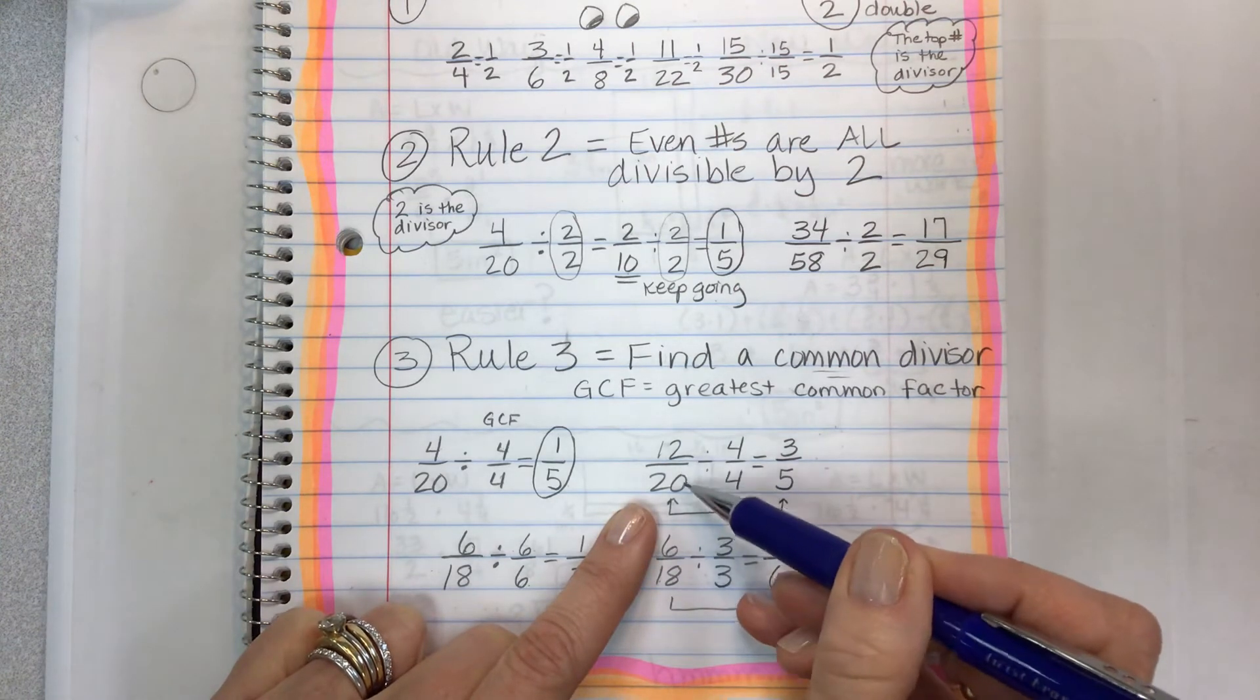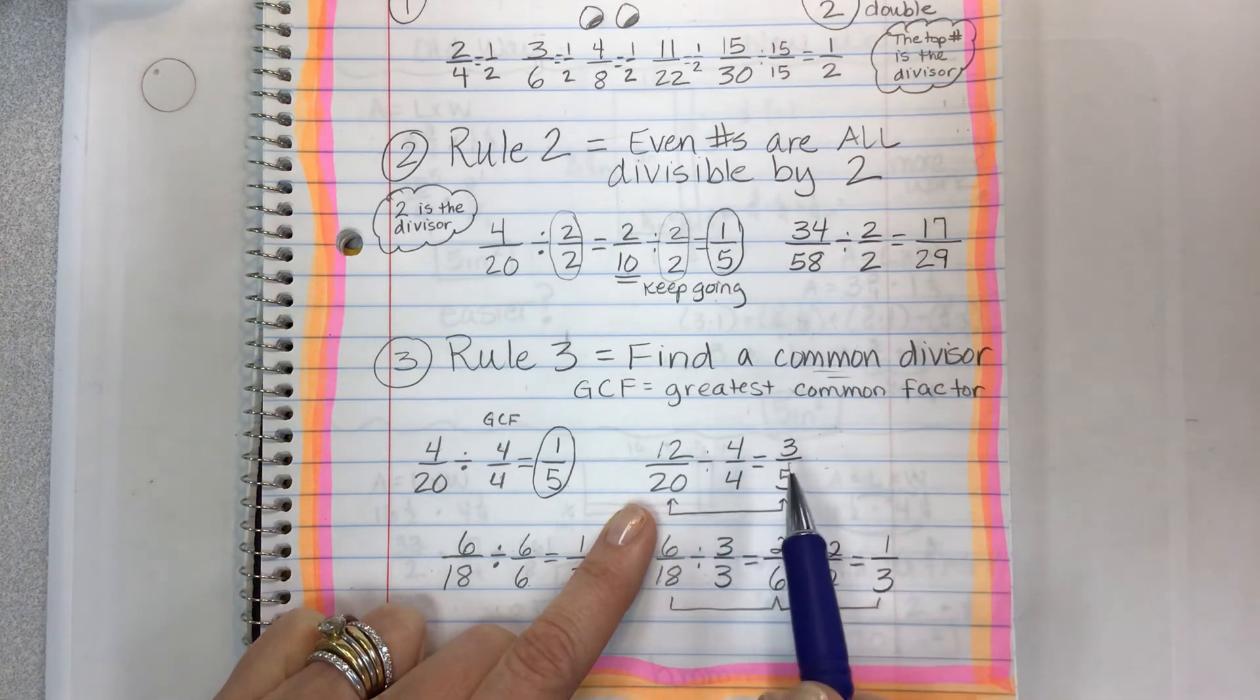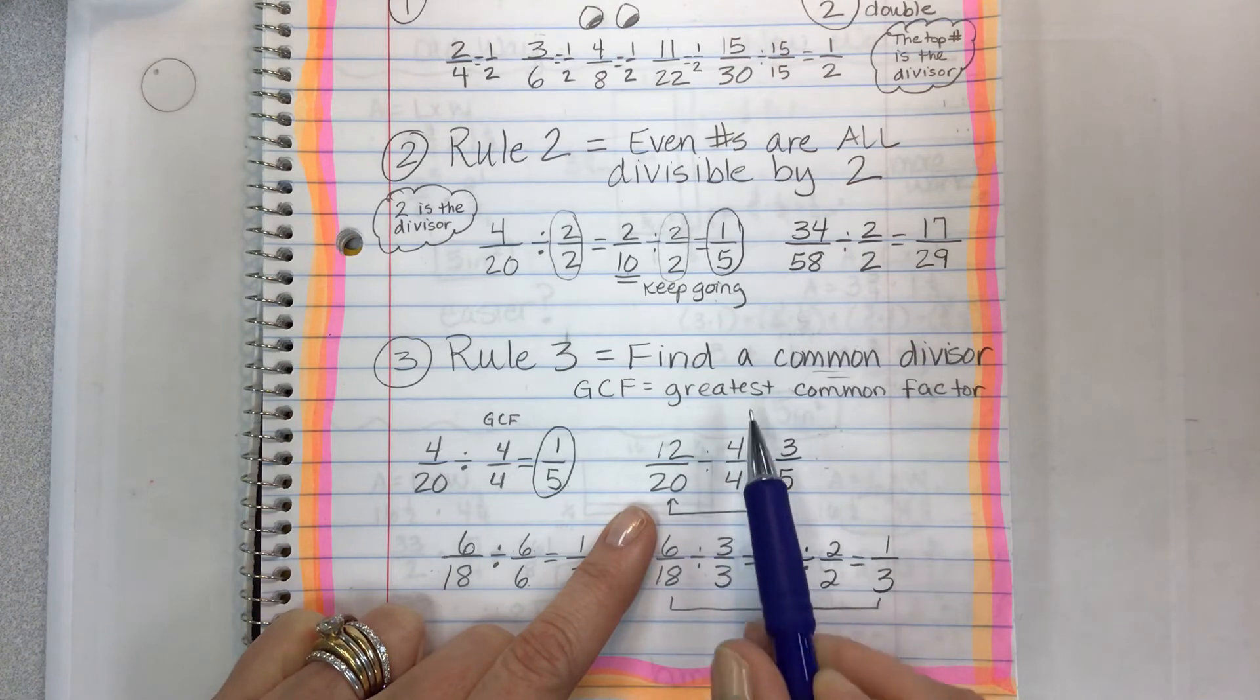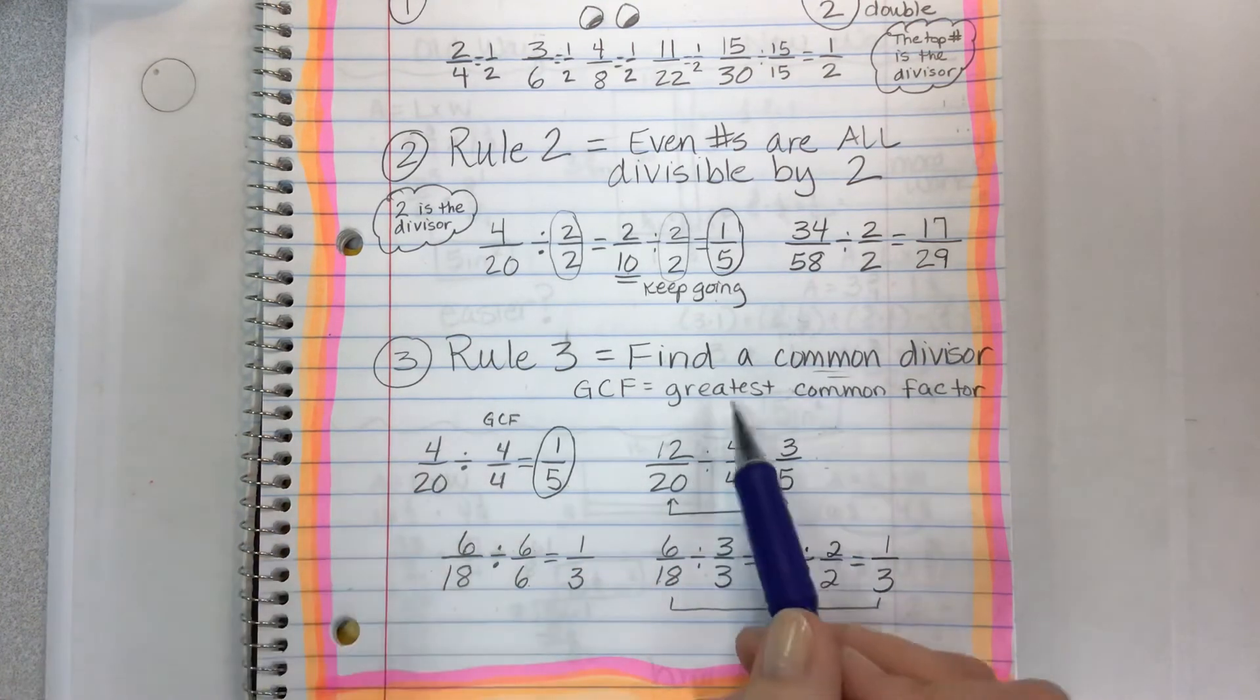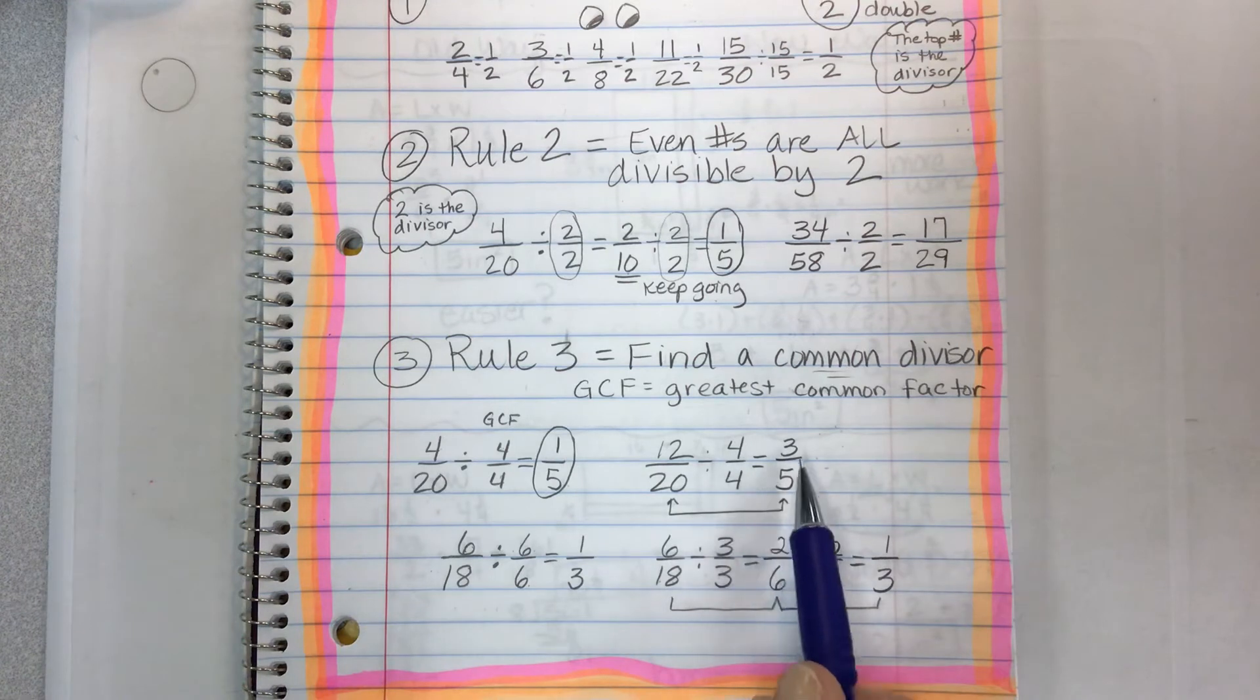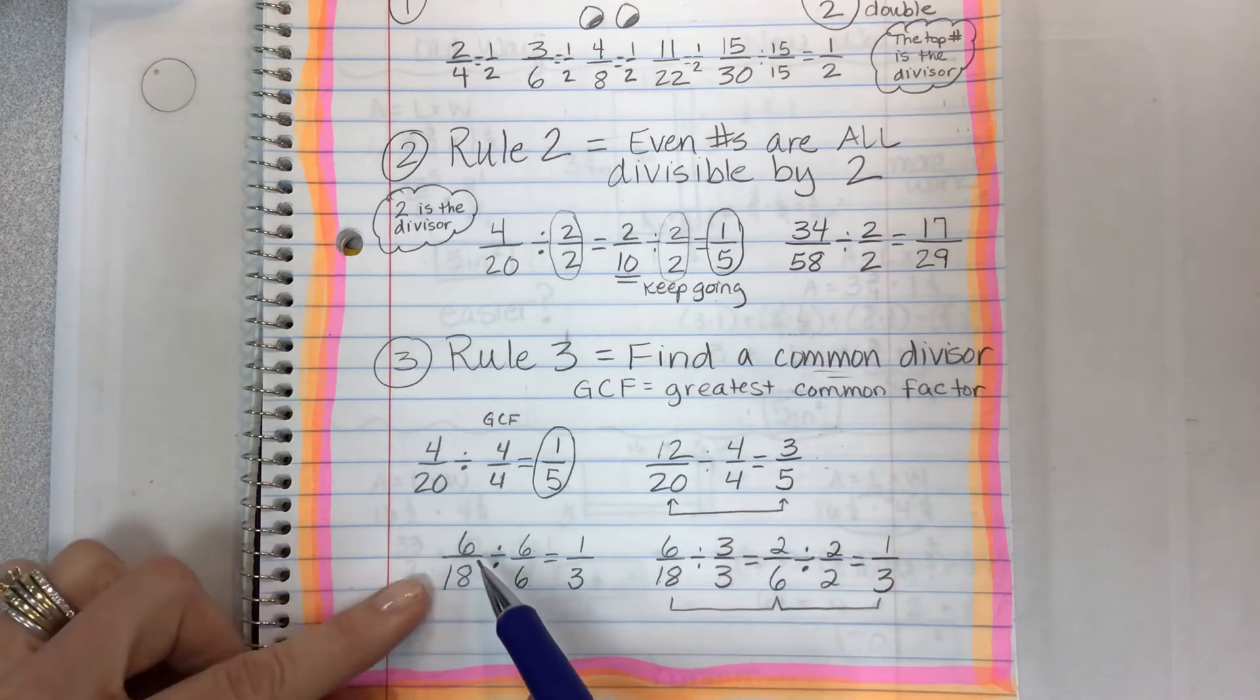If I use two, I would end up with six tenths, which is not my simplest form yet. But if you see that you can divide both 12 and 20 by four, it's a greater number than two. And so you want to find the greatest number right off the bat. If you do it right from the beginning, you can simplify in one step. Twelve twentieths is equivalent to three fifths.